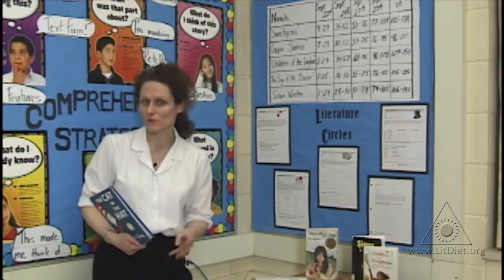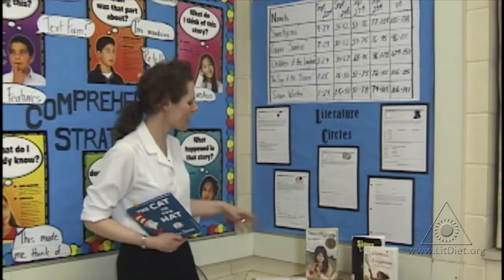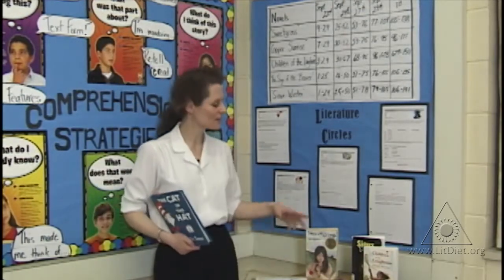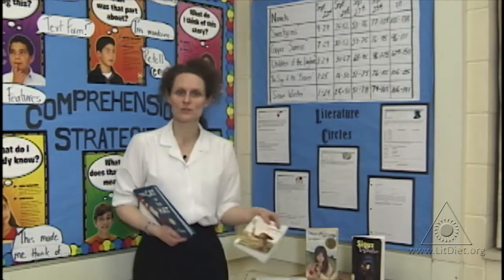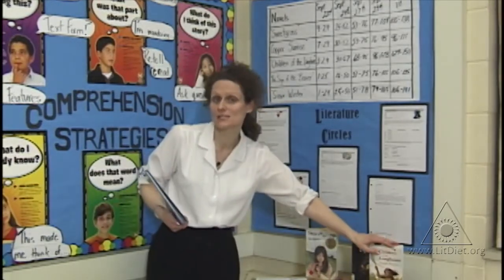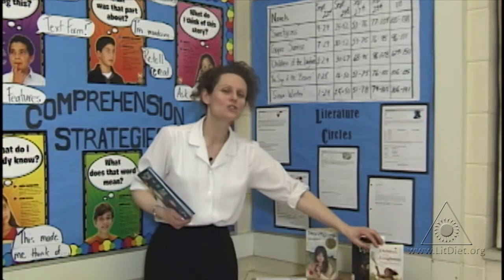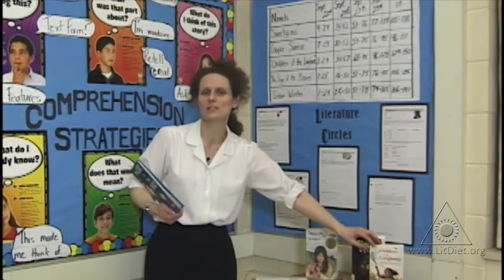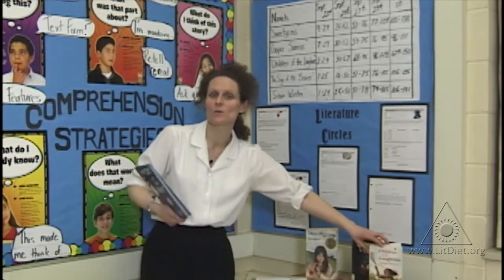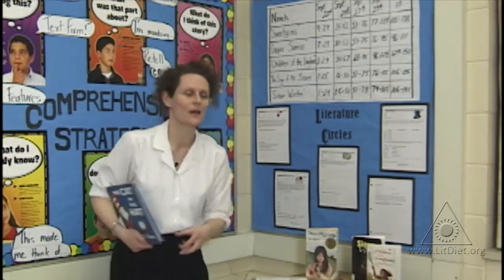I chose five novels for our first literature circle study that involve our social studies unit. These represent different cultures in the First Nations, so that when we actually get to studying First Nations and talking about it in class, each group has their own expertise — they can talk about the way of life of the culture, what kind of houses they lived in, so everybody has something to say.